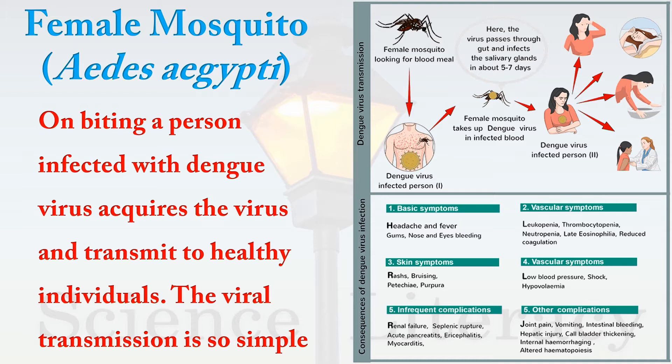The type of mosquito transmitting the dengue virus is known as Aedes aegypti. Under specific circumstances, the viral infection can be fatal. Prominent symptoms of dengue fever resulting from this virus infection include headache, fever, and bleeding from the gums, nose, and eyes.